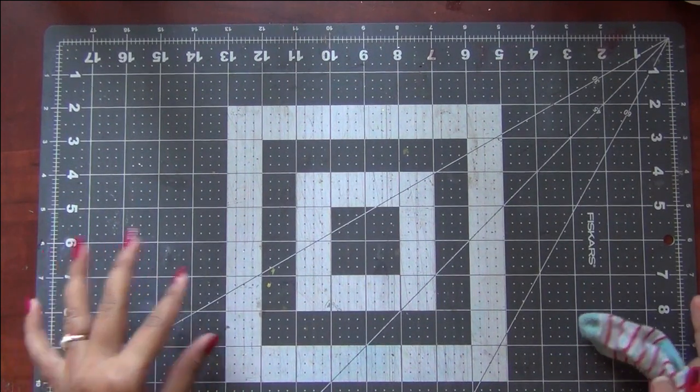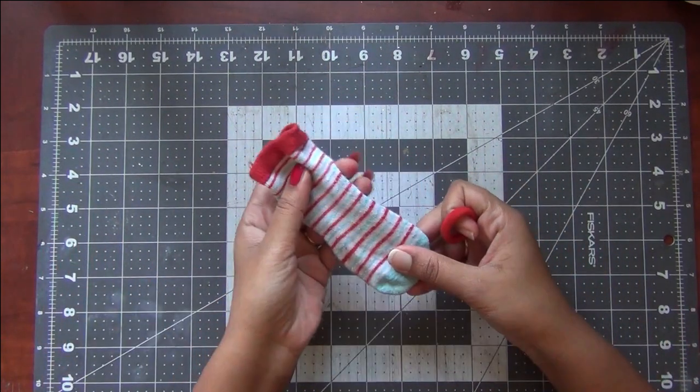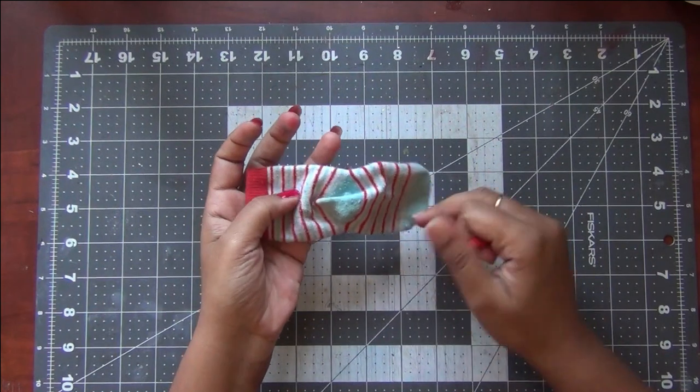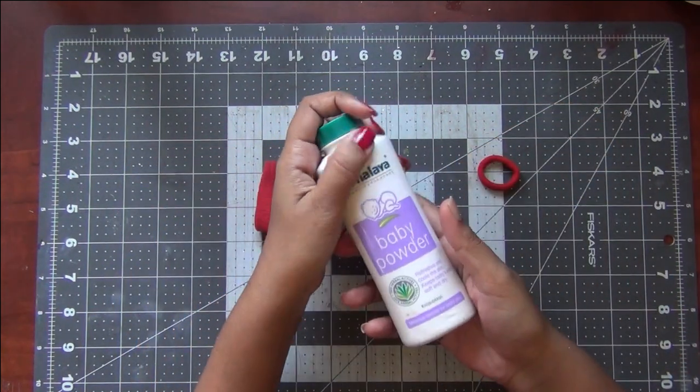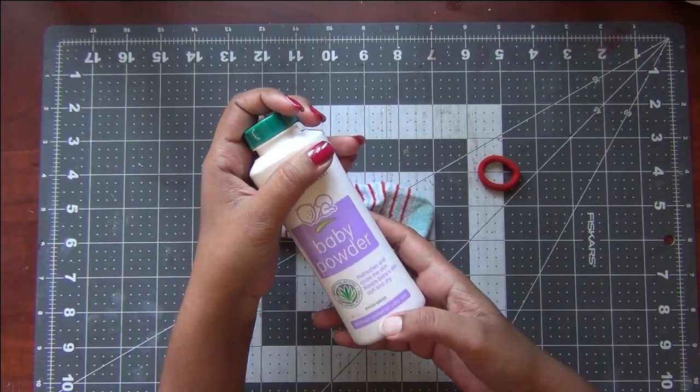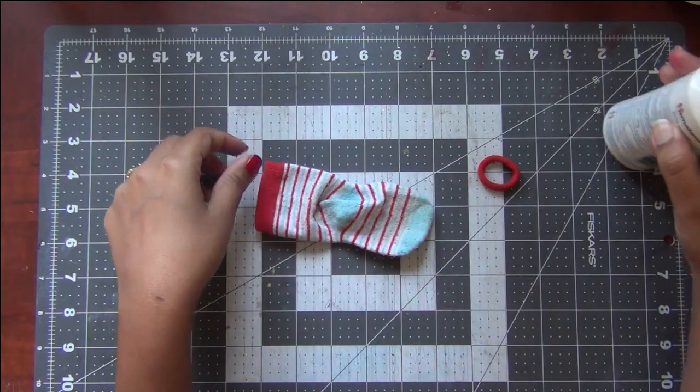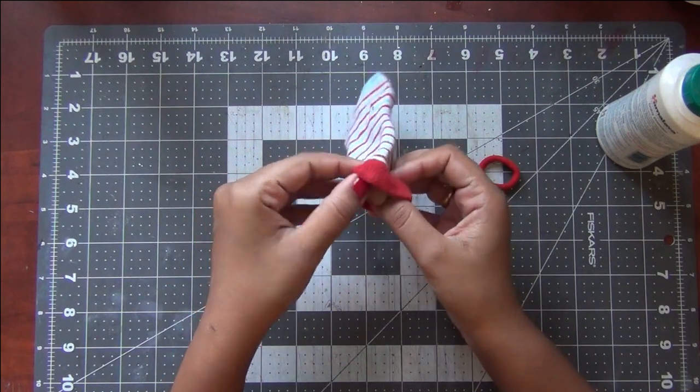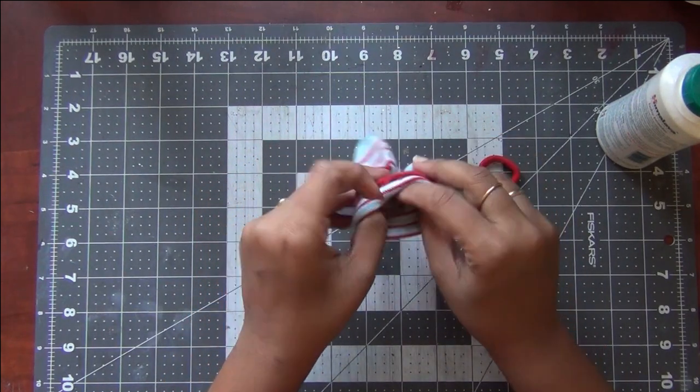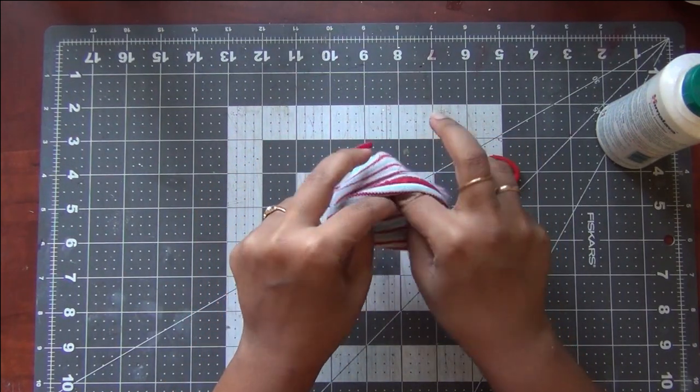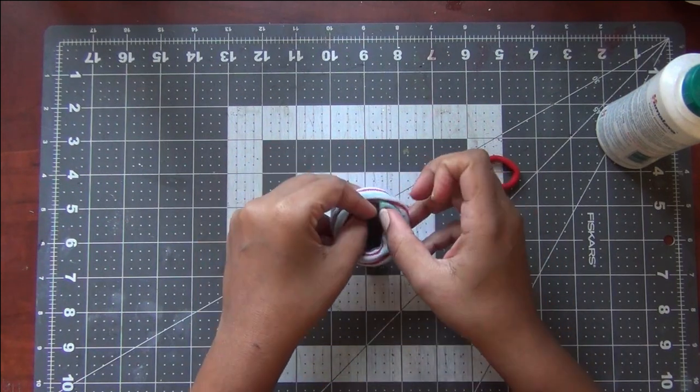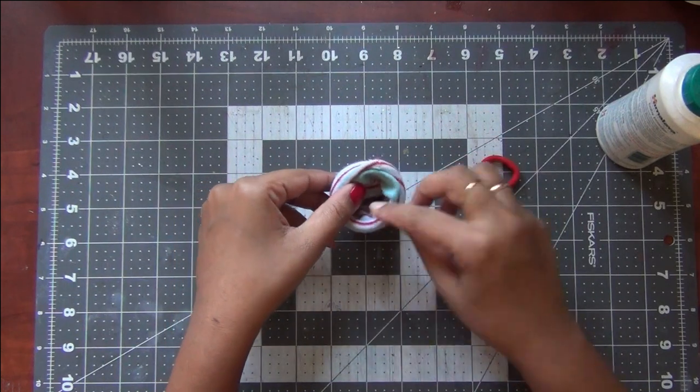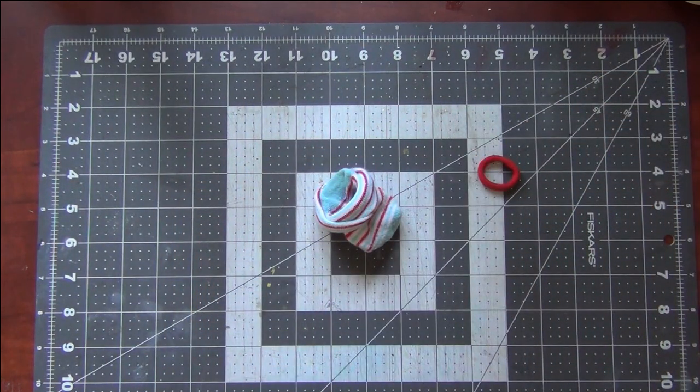For this DIY all you need is a sock, a hair tie or a rubber band, and some baby powder. If you do not have baby powder handy you can use cornstarch also. I have baby powder so I'm using it for today's DIY. I've washed up the socks and now I'm opening it up to make a cup out of the socks, and all I'm doing is emptying a good bulk of baby powder into the socks.